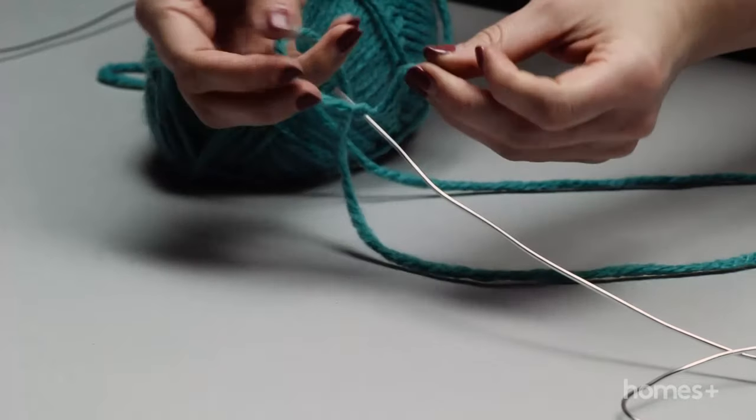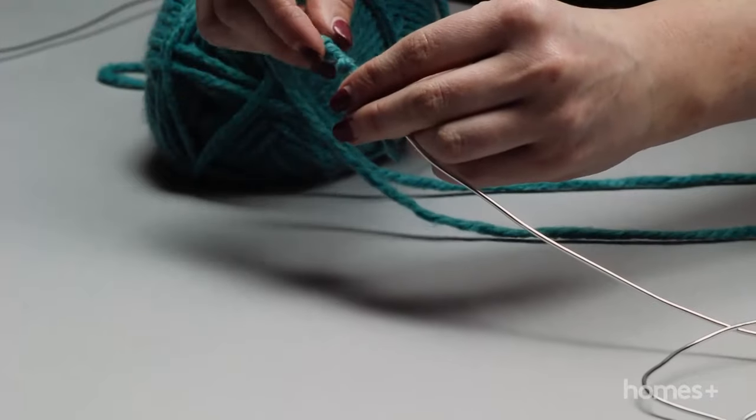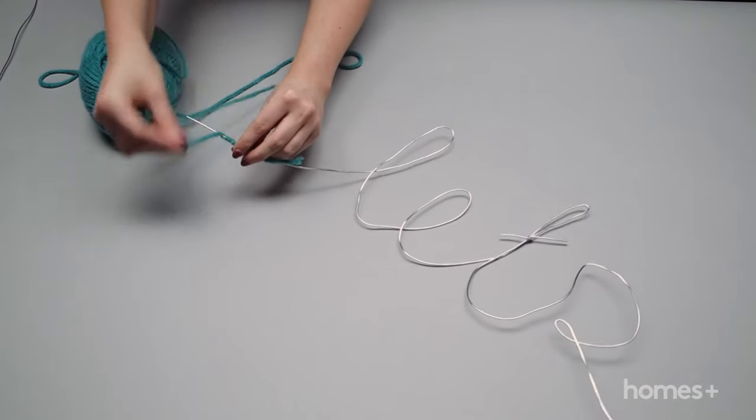Take the yarn and tie one end to the end of one word. Push the knot along the length of the wire around each letter, wrapping the yarn around the wire as you go.